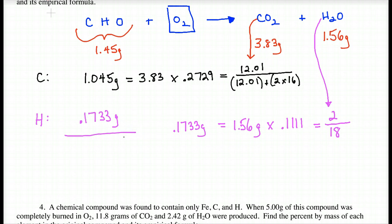Now I'm going to add these two together and subtract by my initial mass of my organic compound, and that should give me my oxygen. Pretty basic stuff here. 1.045 plus 0.1733, and I get 1.2183. I'm going to subtract that from my 1.45, and that will give me my oxygen. So 1.45 subtracting 1.2183, and I get 0.2317 grams of oxygen.